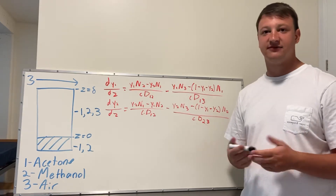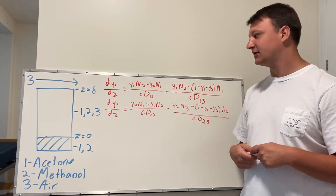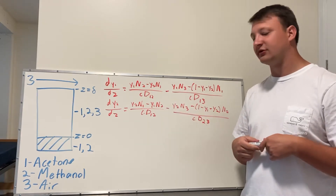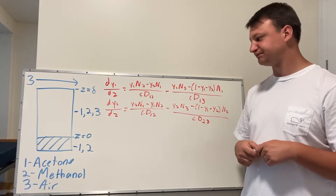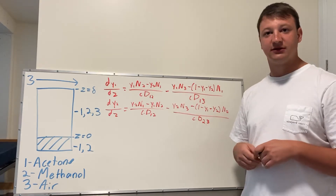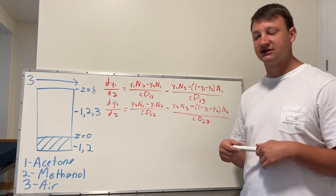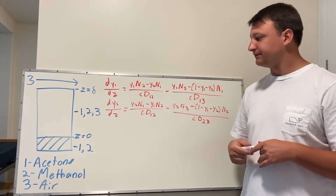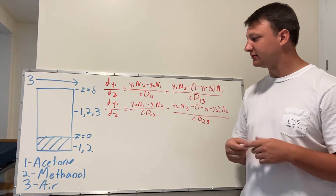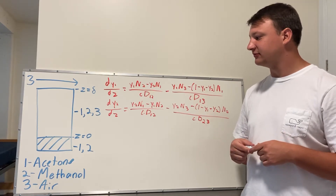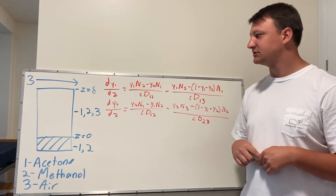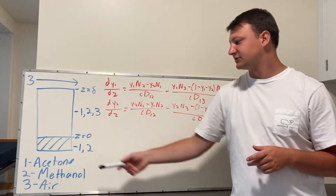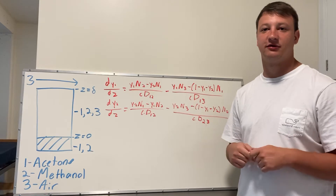Now with the Stefan tube, the first thing you want to think about is our Maxwell-Stefan equations, which I have written on the board already, and we'll get to that in a minute. For the problem, we're going to be looking at finding the molar flux of the components, as well as the profile of the molar fractions of each component — acetone, methanol, and air — while it's in the tube. We're going to do that through a graph.